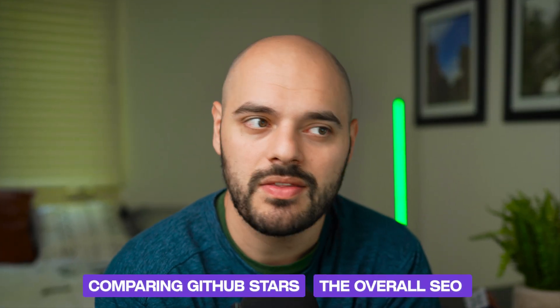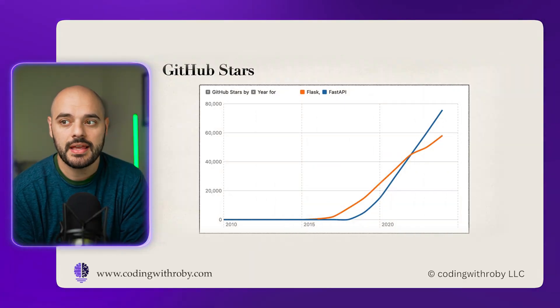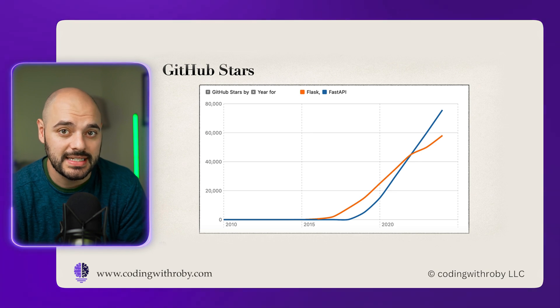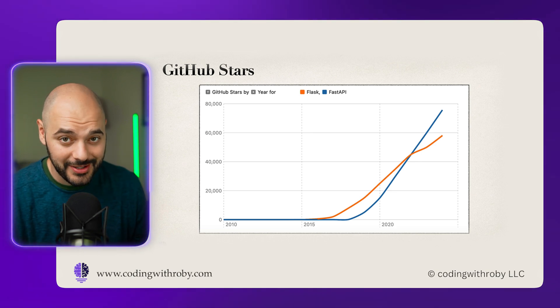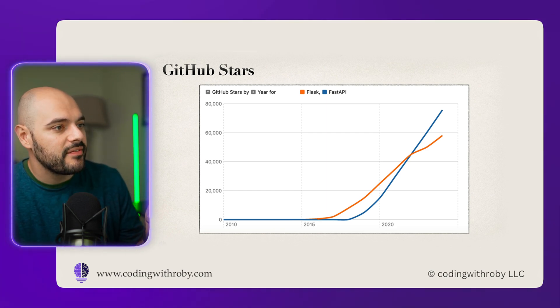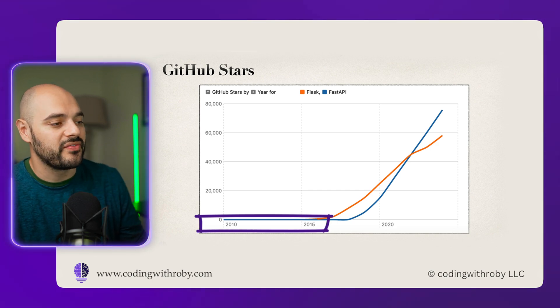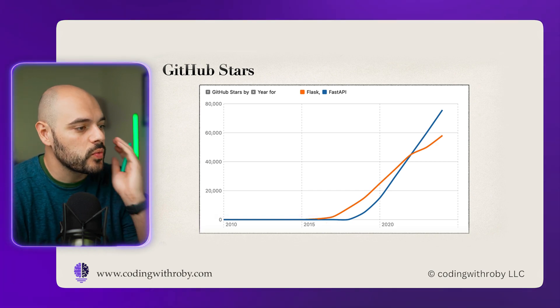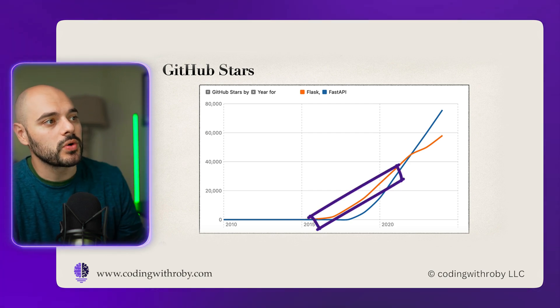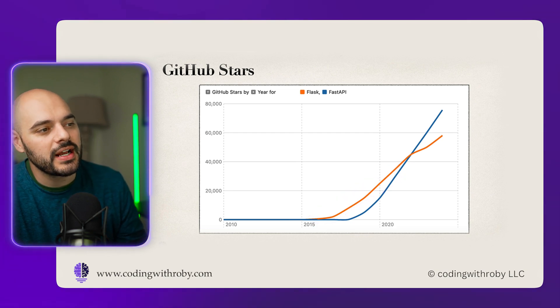The third point is the community behind both projects, which is actually really hard to judge. The best way to do this analysis is comparing GitHub stars and overall SEO. FastAPI is leading with 75,600 GitHub stars while Flask is at 67,600 GitHub stars — so they are both really, really popular. Flask started way before FastAPI and was really getting more popular around 2014, but it's slowly been flattening out.